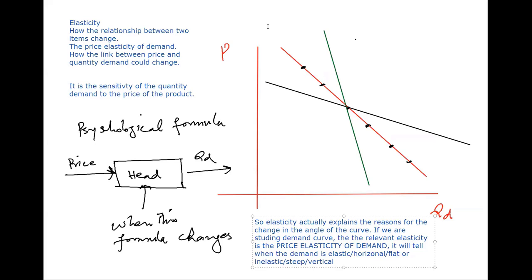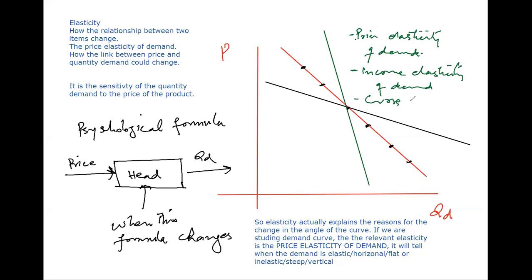The four types of elasticity: first type is price elasticity of demand, second is income elasticity of demand, third is cross price elasticity of demand, and last is supply price elasticity of supply.